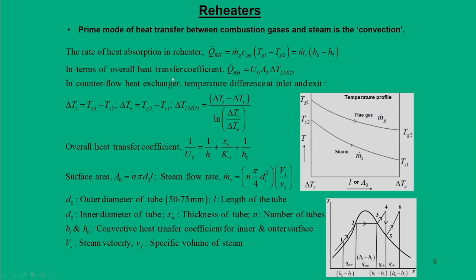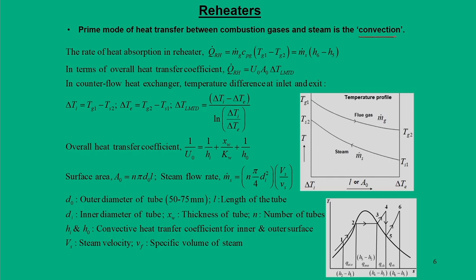In a reheater, similar to a superheater, the mode of heat transfer can be convection or radiation, but since the reheater deals with lower temperatures compared to the superheating unit, the prime mode of heat transfer is convection. For this reheating unit, the initial steam temperature is T_s1 and steam gets reheated to T_s2 — corresponding to T5 and T6. Heat is added from flue gas, whose temperature drops from T_g1 to T_g2 in a counter flow heat exchanger configuration, and the temperature profile is shown accordingly.